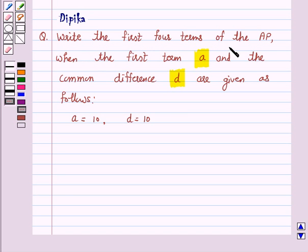Write the first four terms of the AP when the first term a and the common difference d are given as follows: a equals 10 and d equals 10.